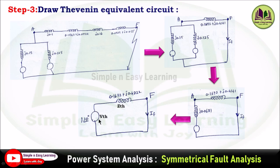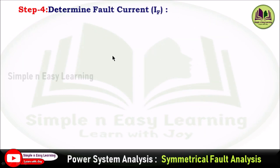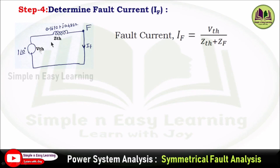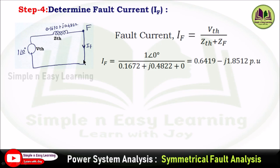The Thevenin source V_Thevenin is not specified in the problem, so it is taken as 1∠0° per unit. The fault impedance ZF is also not specified, so ZF = 0. This gives the complete Thevenin equivalent circuit with a single impedance Z_Thevenin and source V_Thevenin, with the fault point F. Step 4: fault current IF = V_Thevenin / (Z_Thevenin + ZF) = 1∠0° / (0.1672 + j0.4822) = 0.6419 − j1.8512 per unit.